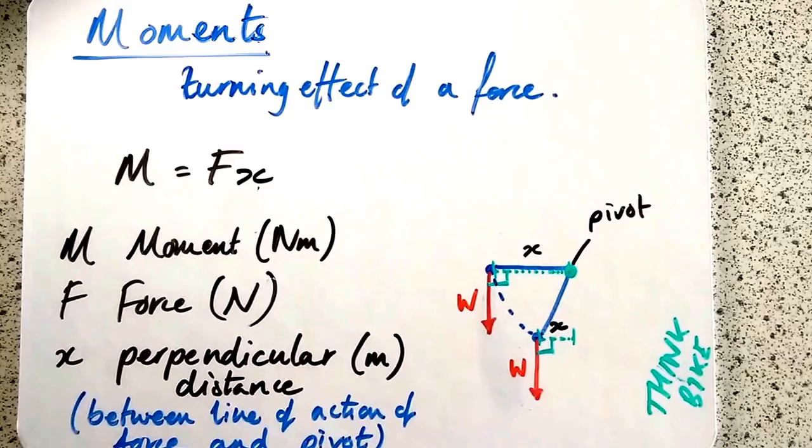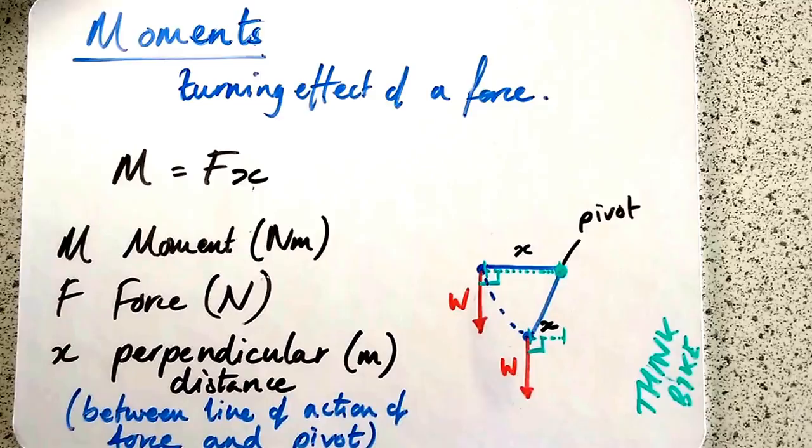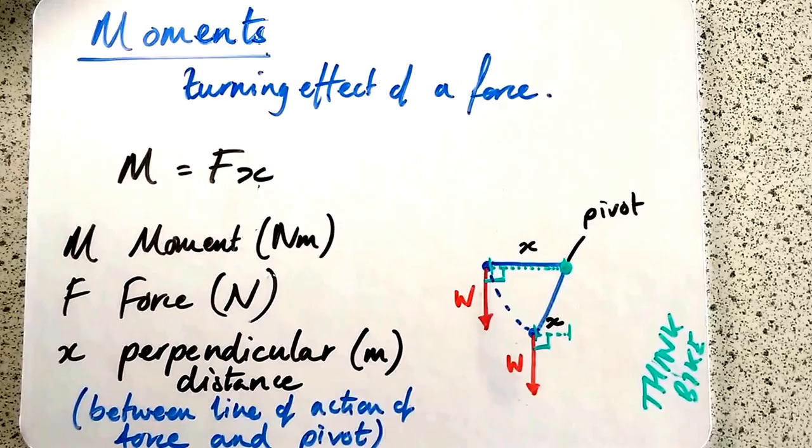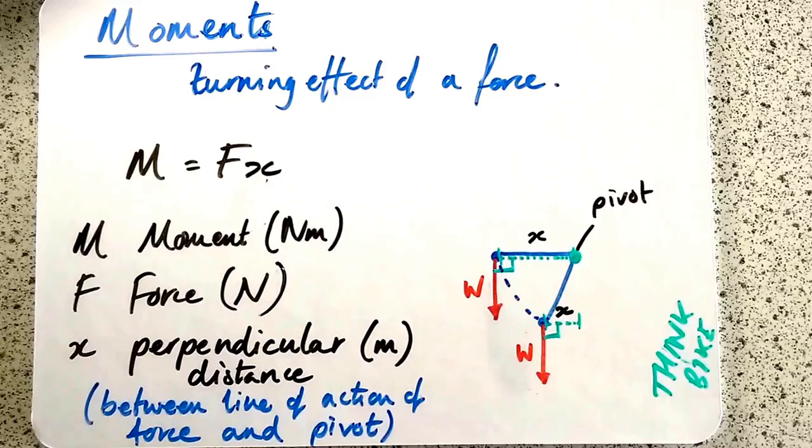In physics we use newtons as the unit of force, and metres as the unit of distance. And we get a moment in newton metres. So there's our equation there. M is fx, force times distance. You must remember that the distance is the perpendicular distance between the line of action of the force and the pivot.